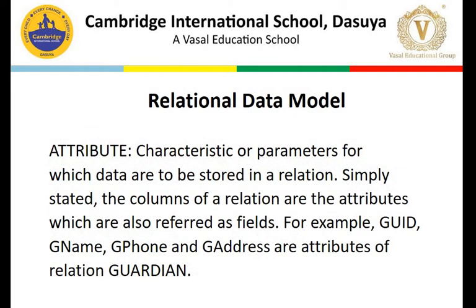Moving forward in the relational model, the next term to focus on is attribute. An attribute is a characteristic or parameter for which data is to be stored in a relation. Simply stated, the columns of a relation are the attributes, which are also referred to as fields. For example, in the guardian table we have guardian ID, guardian name, guardian phone number, and address - these are the attributes of the guardian relation. So an attribute is a column, and they are also called fields.